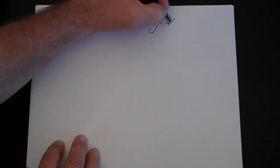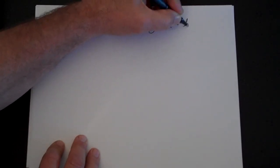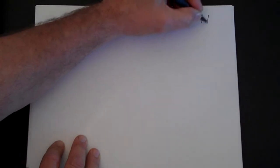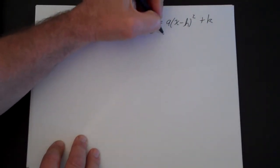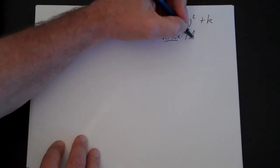So remember what HK form is: y equals a, parentheses, x minus h squared, plus k. And the key here is that in this case the vertex is simply h,k.